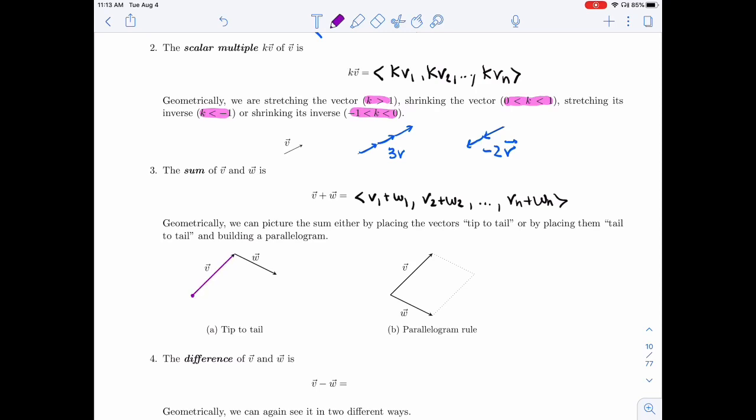So I would first do the V displacement, and then walk along W, and the total displacement, that will be V plus W. So we call this tip to tail because we're placing the tip of V and the tail of W together.